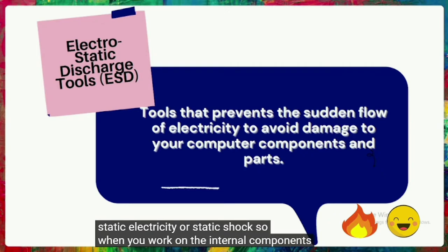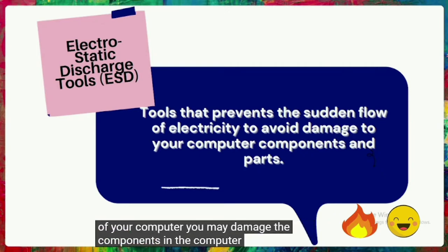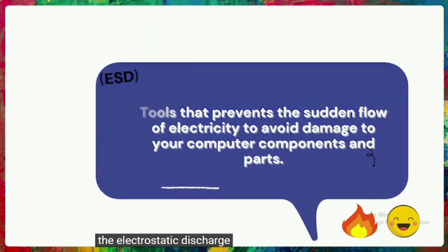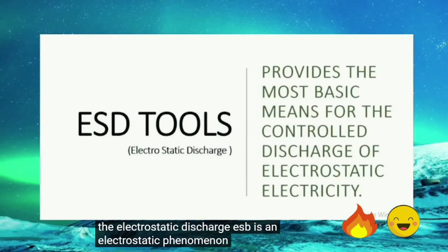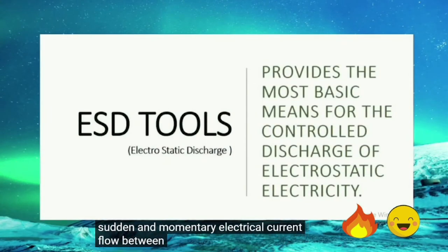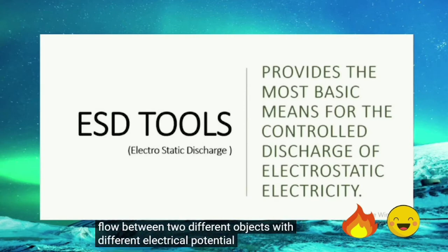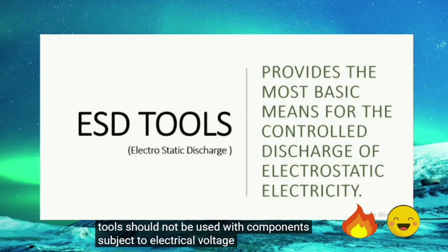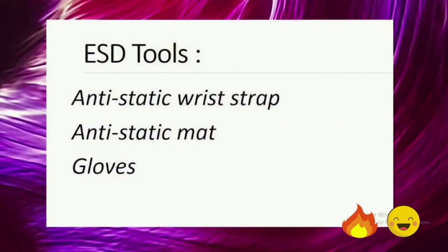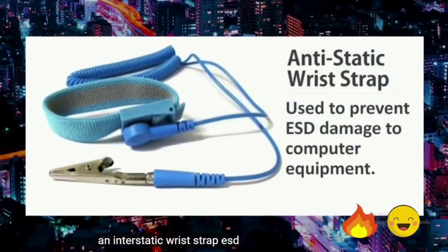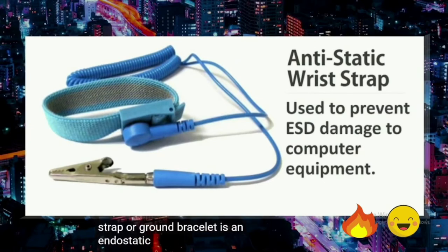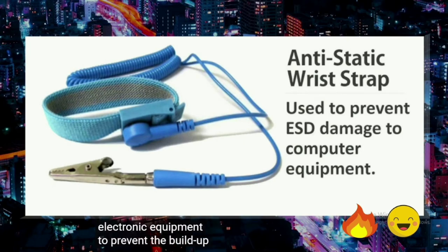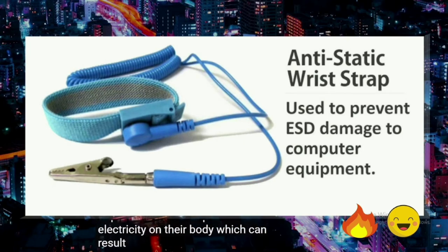When you work on the internal components of your computer, you may damage the components via ESD and not even feel it. ESD is an electrostatic phenomenon which causes a sudden and momentary electrical current flow between two objects with different electrical potential. ESD tools should not be used with components subject to electrical voltage. An antistatic wrist strap, or ESD wrist strap, is an antistatic device used to safely ground a person working on sensitive electronic equipment to prevent the buildup of static electricity, which can result in ESD.